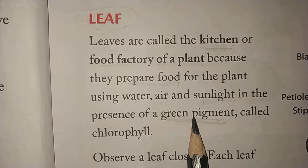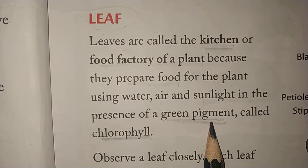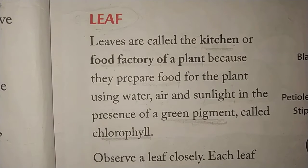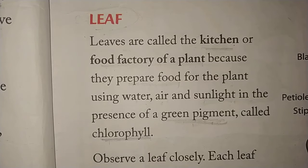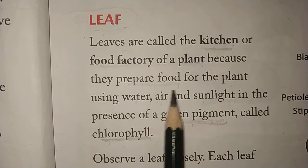Chlorophyll is the substance which gives leaves their green color. Leaves that do not have chlorophyll are not green in color. Chlorophyll is present along with water, air and sunlight to help the plant make food.